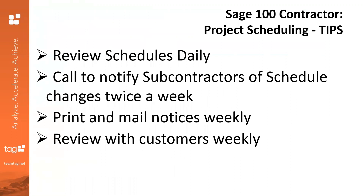Moving on to just a couple of tips recommended by Sage. First, review schedules daily — it's a good idea to review the schedule each day. The duration of a task can change due to a variety of circumstances like weather, supplier delays, or manpower shortages. As those delays occur, extend the duration of the affected tasks, which is easily done by dragging and dropping. You click Mode and then it allows you to resize those tasks. Likewise, if things get completed ahead of time, you can shorten those durations so that everyone is moving on task.